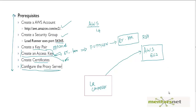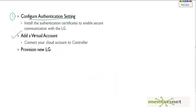Hello, welcome back. In the last lecture we discussed the prerequisites, and we have already met all of them. In this video I am going to show you how to provision a load generator. Provisioning a load generator consists of three steps. The first step is you have to configure the authentication setting.